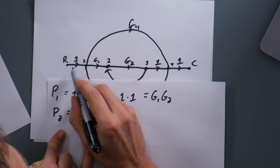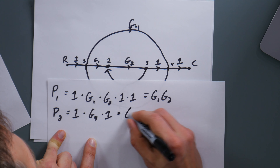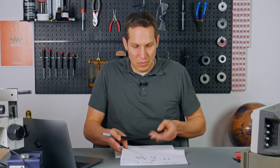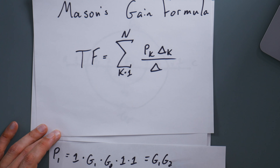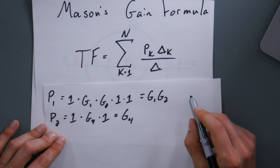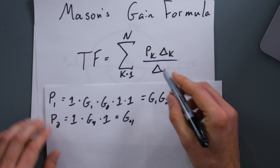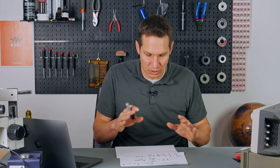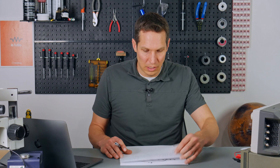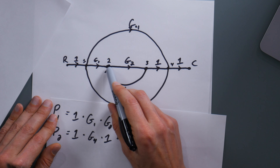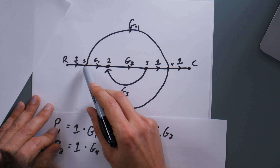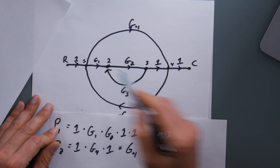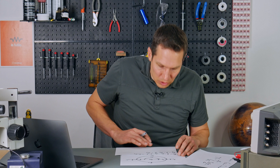Going up to the numerator, Pk is the forward gain of the kth forward path. Looking back at our example, connecting the input and output we have one forward path, and we also have a second forward path. Pk is simply the gain as you traverse that path. Delta_k is the part of delta not touching the kth forward path — everything is like a different language until you do an example, and then everything falls together.